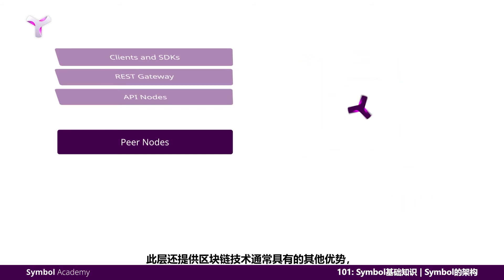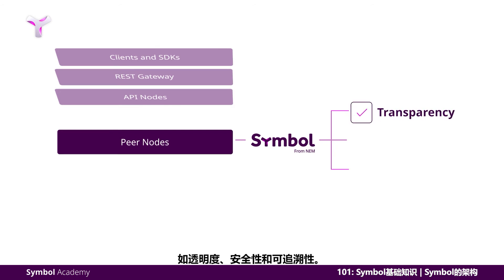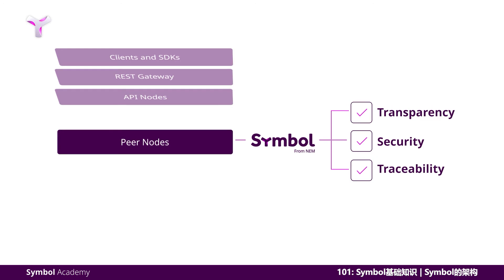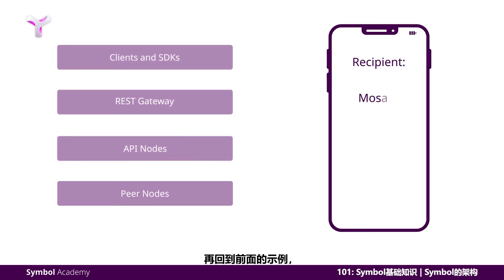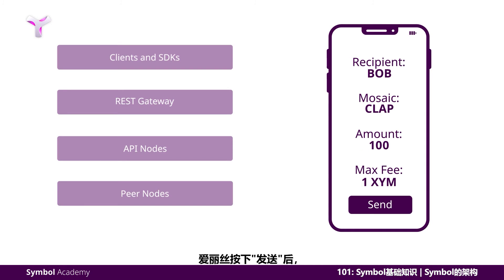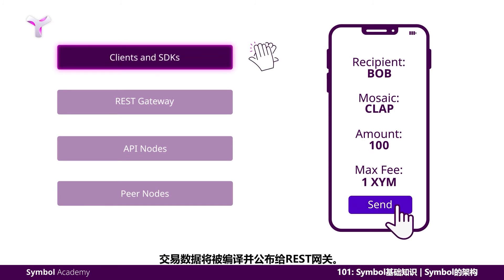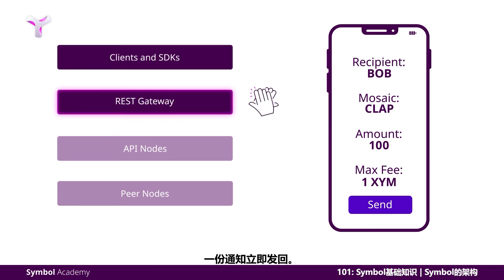This tier also gives Symbol the standard benefits of blockchain technology like transparency, security, and traceability. Referring back to the example introduced earlier, after Alice presses the send button, the transaction data is compiled and announced to the REST gateway. A notification will be returned immediately, but at this point it would remain unknown whether the transaction is valid.